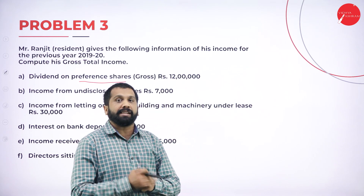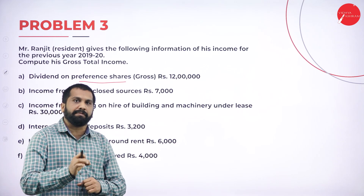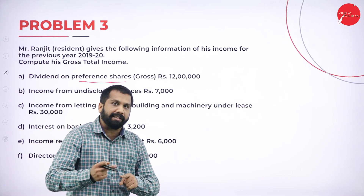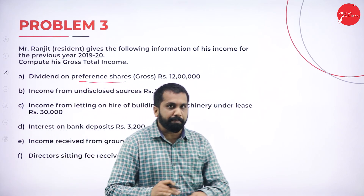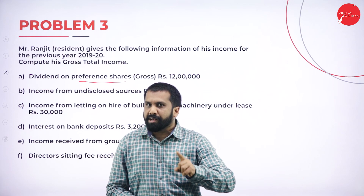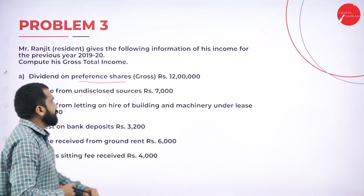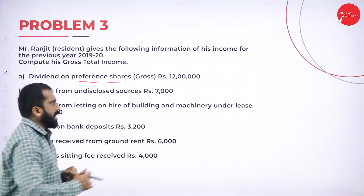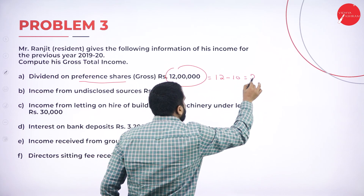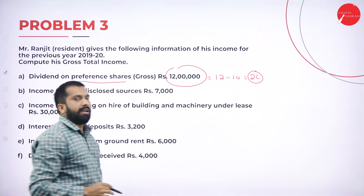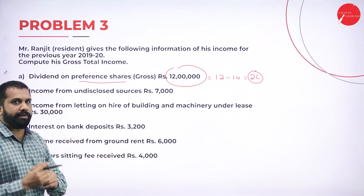Up to 10 lakh, dividend received is exempted. Above 10 lakh it becomes taxable — so dividend is not 100% exempted. The limit is 10 lakh. In this case, dividend from preference shares is 12 lakh, so 12 minus 10 means only 2 lakh is taxable.